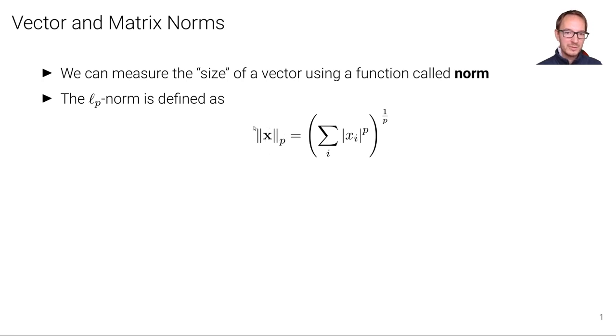First of all, the notation for norm is these two vertical lines on the left and right side of the vector symbol. And we have this subscript P here, which defines the P value of the norm. So, for example, in the case of an Euclidean norm, this would be P equal 2, so we would have a 2 instead of the P here.